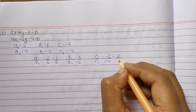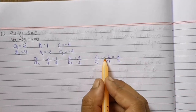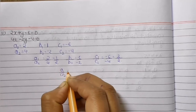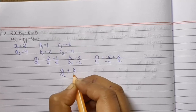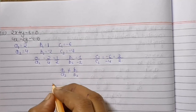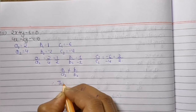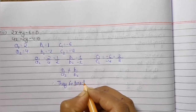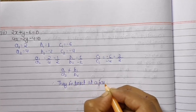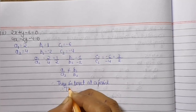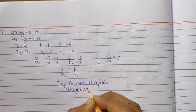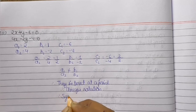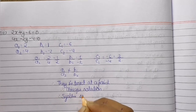c1/c2 equals minus 6 by minus 4; dividing by common factor 2 and the minus signs cancel, giving 3/2. We see a1/a2 is not equals to b1/b2, which means the lines intersect at a point. They intersect at a point, hence we get a unique solution. So the system is consistent.